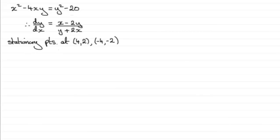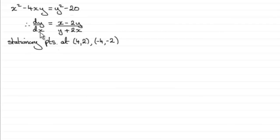Welcome to this tutorial where I'm going to show you how we can determine the nature of stationary points when we've got an implicit equation. In an earlier video — you can find it via the link displayed here, or on my website examsolutions.net directly above this one — we found by differentiating that dy/dx equals (x − 2y)/(y + 2x), and we found the stationary points at (4, 2) and (−4, −2).